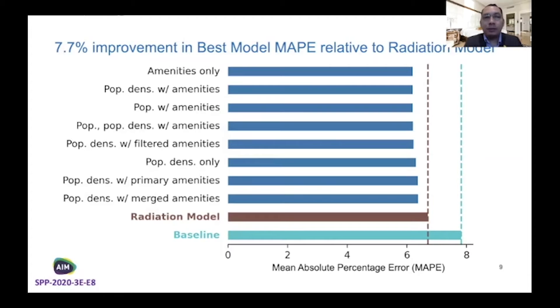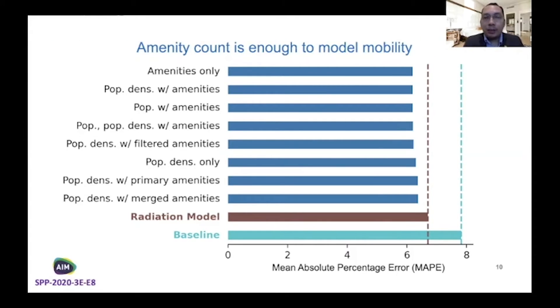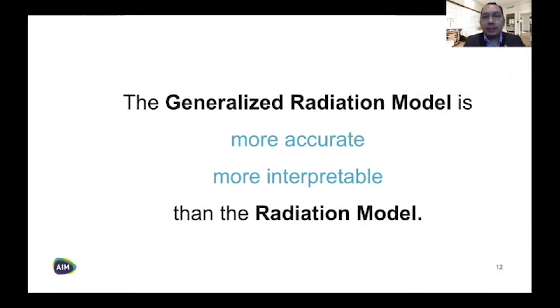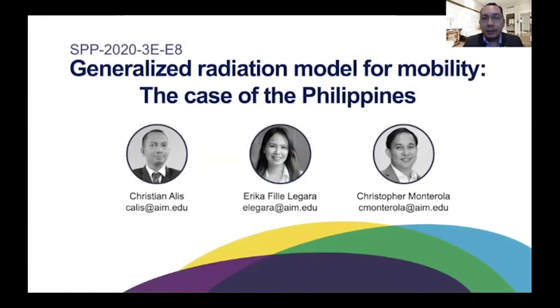I will share three main results. First, we found that there's a 7.7% improvement in the best model MAPE relative to the gravity model. But more importantly, we found that the best model actually just uses amenity counts. Therefore, we don't really need population and population density to model mobility. Interestingly, the most important features are not obviously directly related to jobs, so manually selecting features is not that easy. We found that the generalized gravity model that we introduced is, in fact, more accurate and more interpretable than the gravity model. Thank you for viewing, and I look forward to the session to answer your questions.